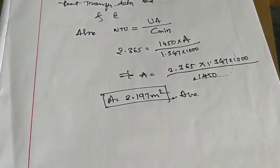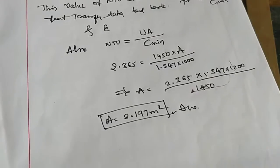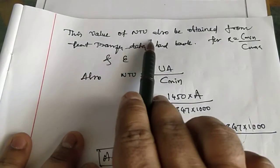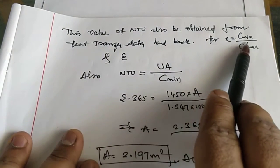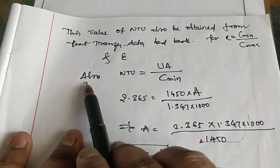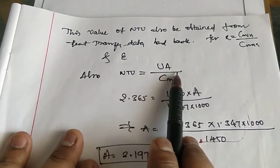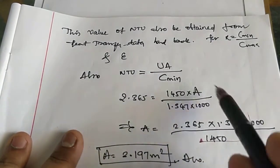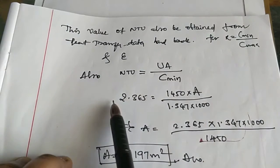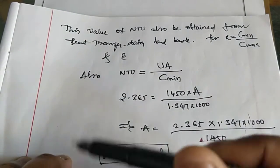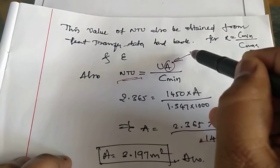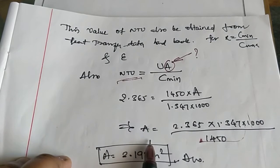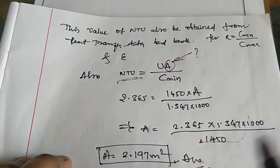Once the NTU value is obtained, we use the relation NTU = U × A / C_min to calculate the surface area. Substituting NTU = 2.635, U = 1450 W/m²°C, and C_min = 1347 W/°C, we get the surface area A = 2.197 m². This is the desired answer.